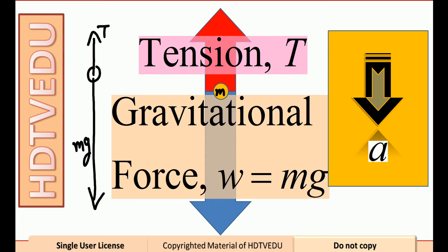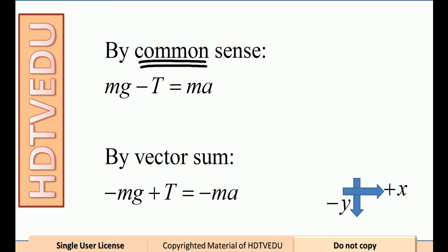So gravitational force minus tension equals ma. By common sense, bigger force minus smaller force equals net force. Net force is always mass times acceleration.